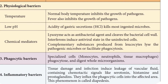Phagocytic barrier: specialized cells — monocytes, neutrophils, and tissue macrophages — perform phagocytosis and digest whole microorganisms through cell-eating. These specialized cells, including monocytes, come under the immune system and act as a phagocytic barrier, digesting the microorganisms.